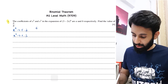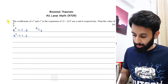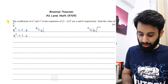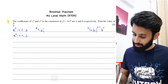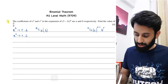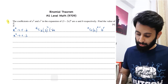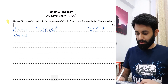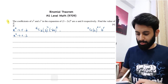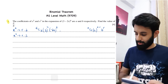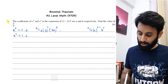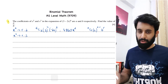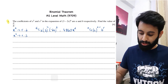Plugging in r = 2, using the formula nCr · a^(n−r) · b^r, we get 6C2 · 3⁴ · (−2x)². So that's 15 times 3 to the power 4 times the square of −2 which is 4. We're looking at 4860. Since we're just interested in the constant coefficient, I'm not going to write x².